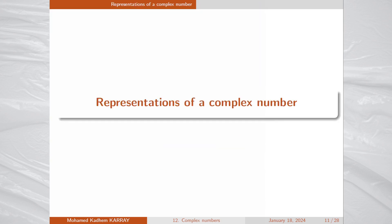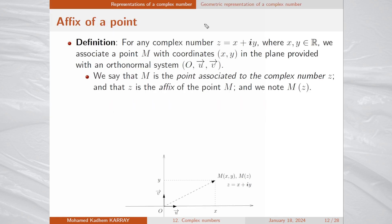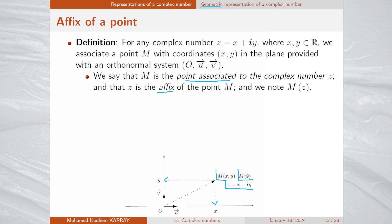Complex numbers may be represented in different ways. For the geometric representation, for any complex number z with real part x and imaginary part y, we consider the point M with coordinates (x, y) — x is the abscissa and y is the ordinate. We say M is the point associated to z and that z is the affix of M.